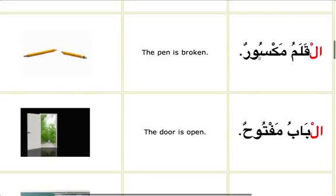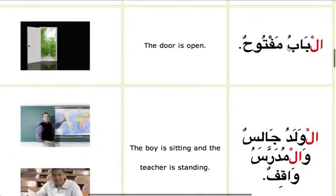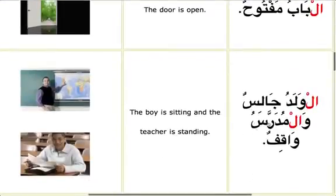Let's do some practice. Al-qalamu maksoorun — the pen is broken. Al-qalamu is muptada: definite, single damma. Maksoorun is khabar: indefinite, double damma. Al-baabu maftoohun — the door is open. Again, muptada is marfu, and when the khabar is a single word it is indefinite and marfu. Al-waladu jaalisun, wal-mudarrisu waaqifun — the boy is sitting and the teacher is standing.